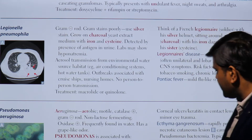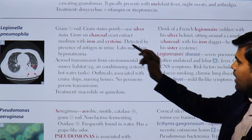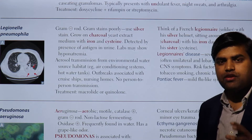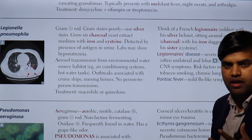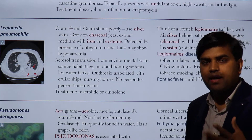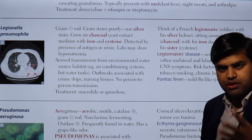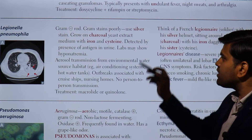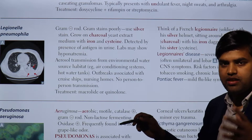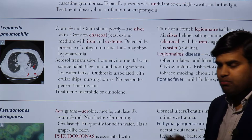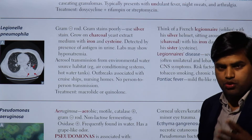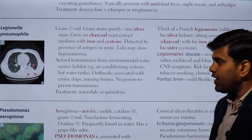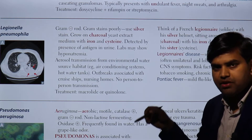Legionella are gram-negative rods that stain poorly on gram stain, so we need a special silver stain for identification. They grow on charcoal yeast extract (BCYE) medium — a special media enriched with iron and cysteine — and will not grow on normal media like blood agar, MacConkey agar, or chocolate agar. They are usually detected by the presence of antigen in the urine. Due to hyponatremia, the person will develop CNS symptoms.